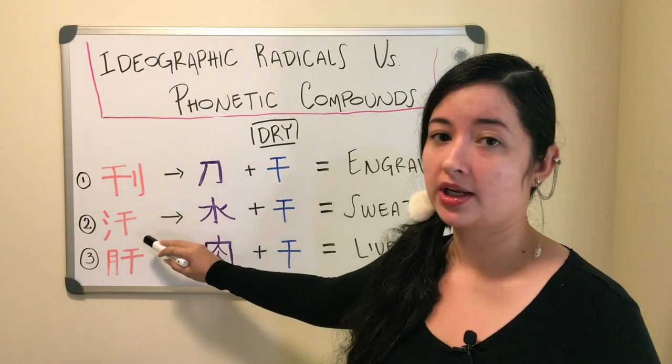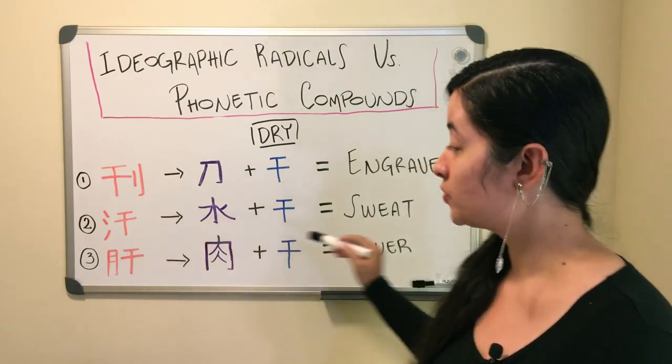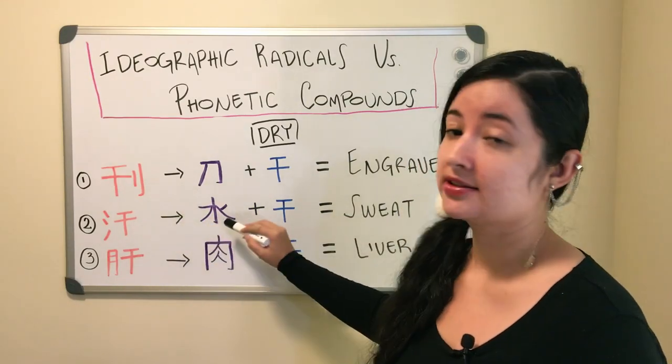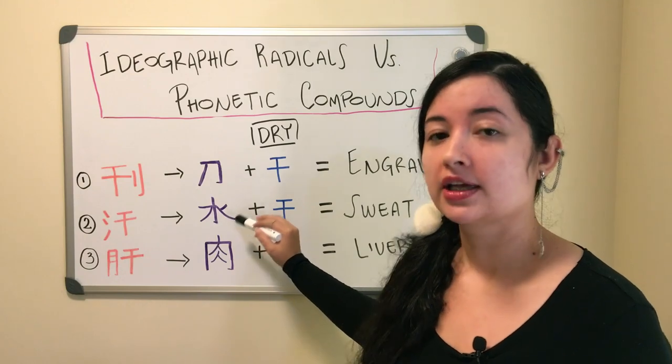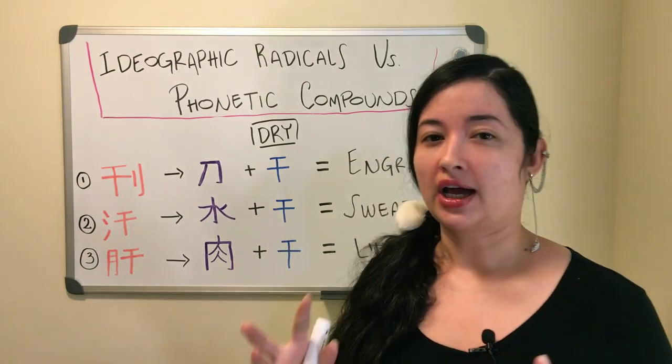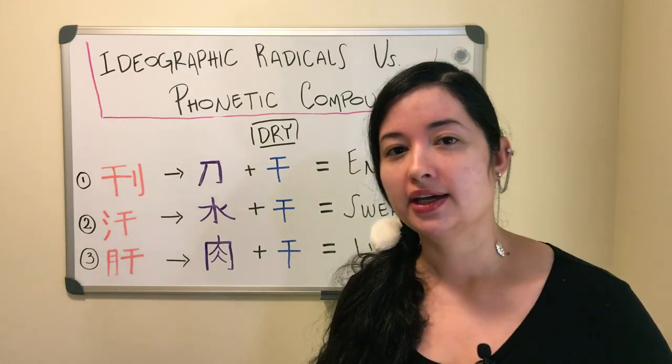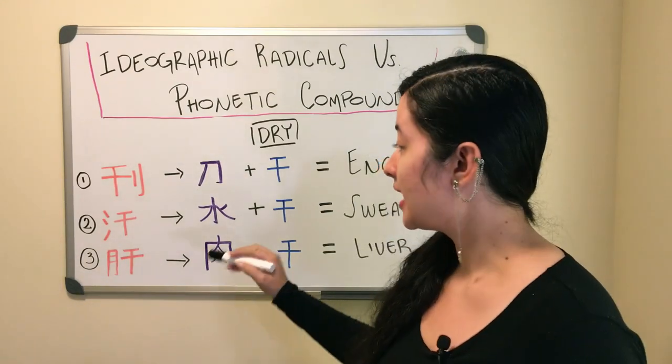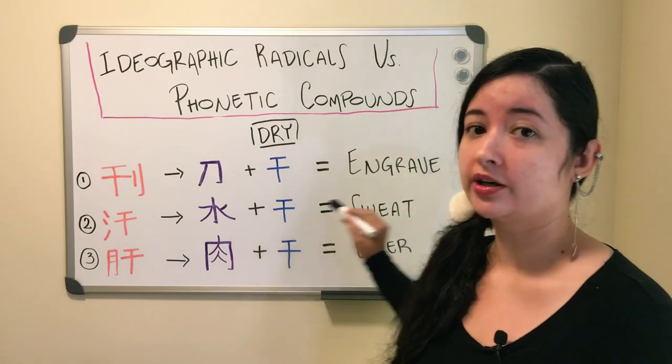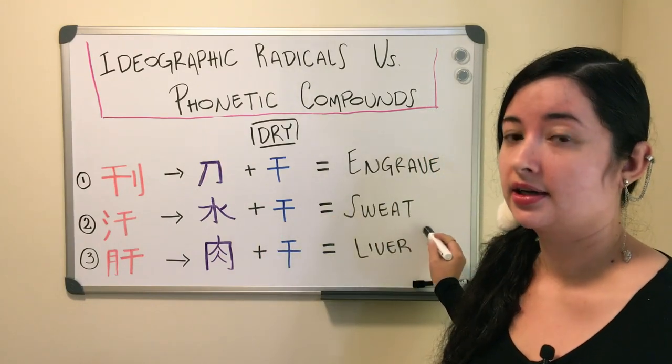For the next one we have the kanji for sweating. This kanji has the radical for water. Water is often used in regards to liquids, so sweating and liquid, that's how we have the radical for water in this kanji right here.